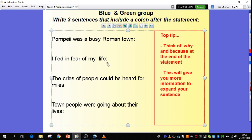I fled in fear of my life, because. Why did you flee in fear of your life? Explain it. The cries of people could be heard for miles, colon, because. Explain it. And so on. And then, if you're feeling adventurous, Blue and Green Group, you could create one completely on your own.